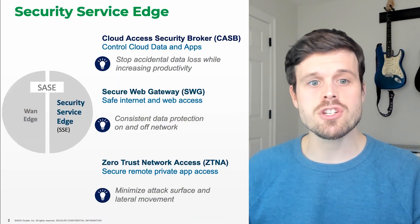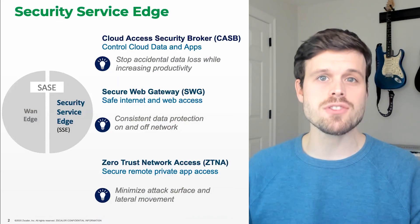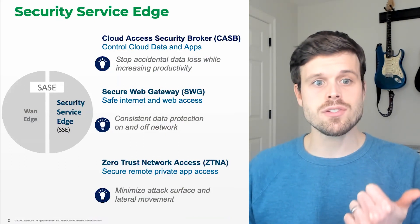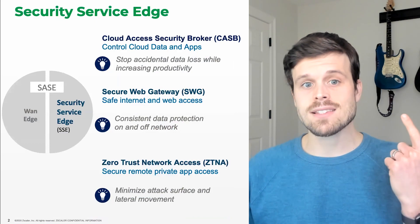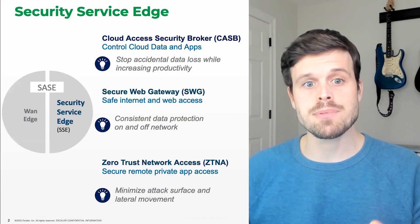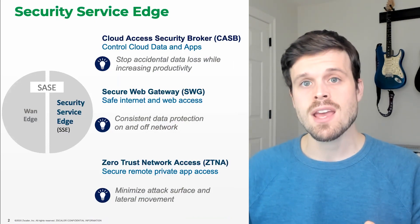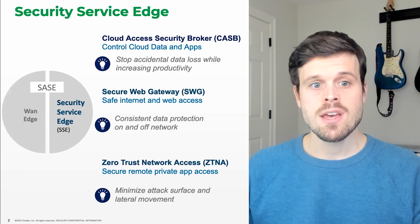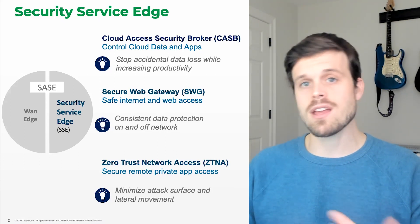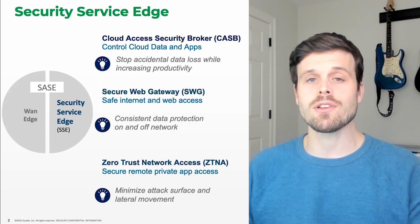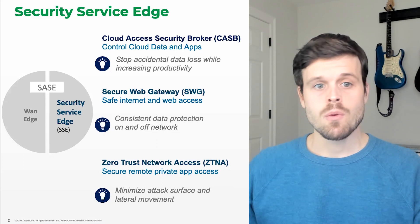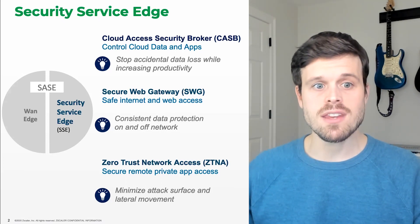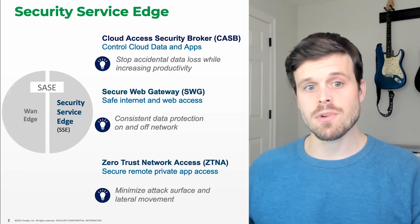SSE is the convergence of three major security capabilities: securing access to the internet and the web, securing access to internal apps and resources, and securing access to SaaS and cloud apps. In other words, you need the ability to secure inbound, lateral, and outbound movement. These are exactly the same capabilities that you need to defend against a ransomware attack.